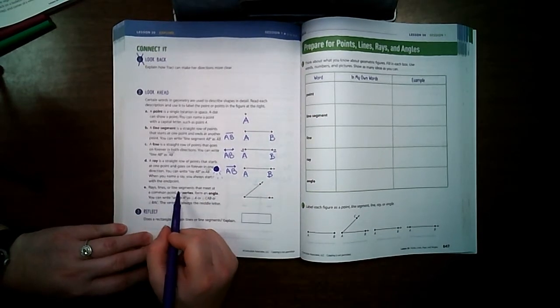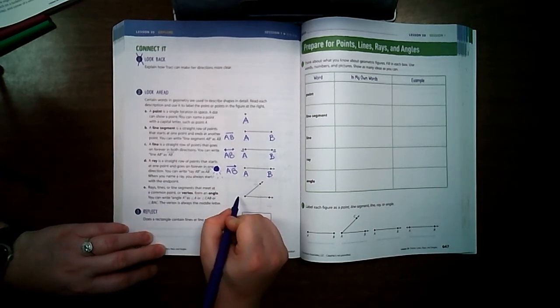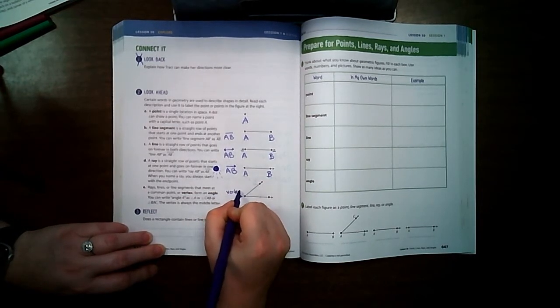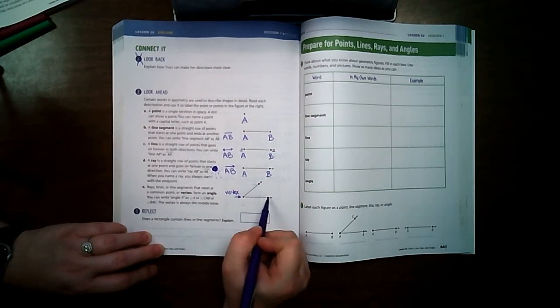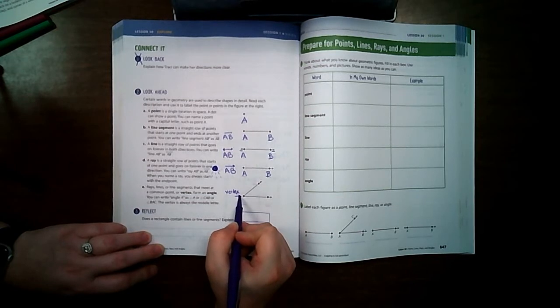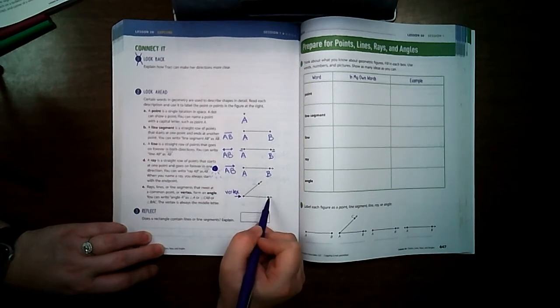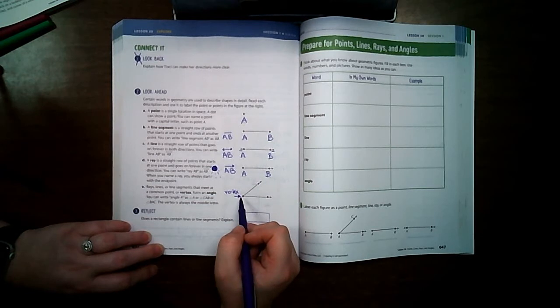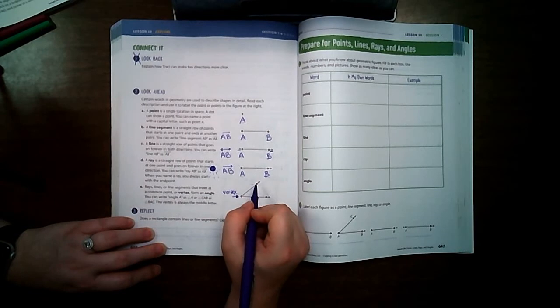Rays, lines, or line segments that meet at a common point is called a vertex. Right here, this point is called the vertex. You're probably thinking, well, that's just a point—it is a point. But do you see how these two meet at that point? Because they meet at that point in that corner and there's a line coming from each side of it, that is what makes it a vertex.